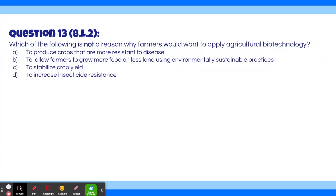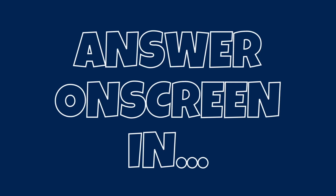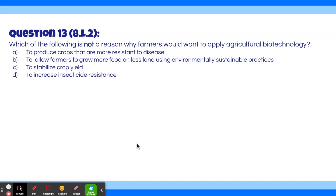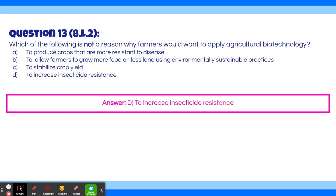Question 13: Which of the following is not a reason why farmers would want to apply agricultural biotechnology? A, to produce crops more resistant to disease. B, to allow farmers to grow more food on less land using environmentally sustainable practices. C, to stabilize crop yield. D, to increase insecticide resistance. The answer is D. The first three are all benefits of agricultural biotechnology. However, farmers do not want to increase insecticide resistance — this means insects would become resistant to insecticides, which is a possible downside of biotechnology in agriculture.